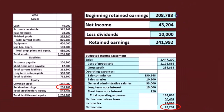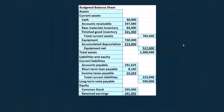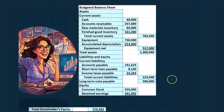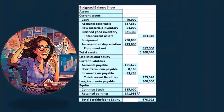So we've got the $208,788 plus net income of $43,204 minus the $10,000 in dividends, giving us ending retained earnings of $241,992, and that's going to be this item here.